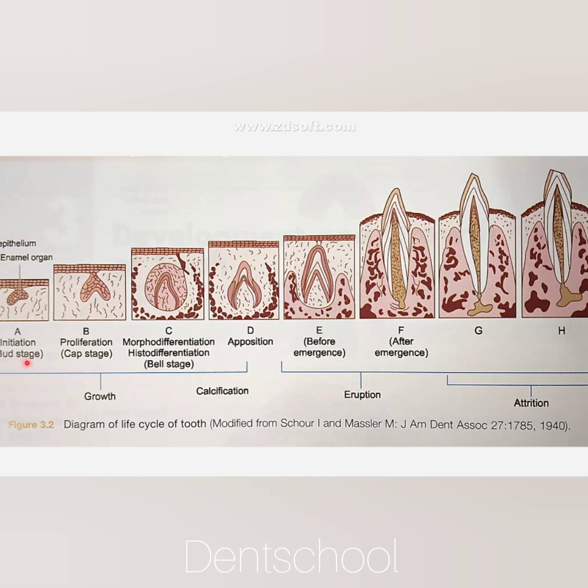This is a diagram of the life cycle of the tooth. We divide the life cycle based on morphology: first the bud stage, cap stage, and bell stage.